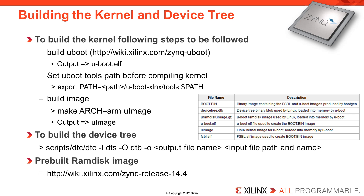The device tree is supported and required for the Xilinx ARM kernel. Previous to Linux kernel 3.0, most ARM Linux kernels did not support device tree and were based on platform data. The device tree compiler is located in the Linux kernel tree in the scripts/dtc directory. Note that the kernel needs to be built with device tree turned on in the kernel configuration for the DTC binary to be present in the scripts/dtc directory.